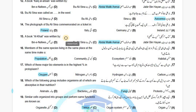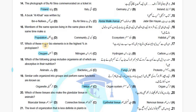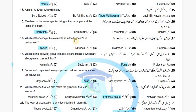The statement asks: Abu Ali Sina's photograph is put on a ticket in which country? The answer is Poland. The book Abu Al-Khal was written by Abdul Malik Asmai. Members of the same species living in the same place at the same time make a Population level of organization.